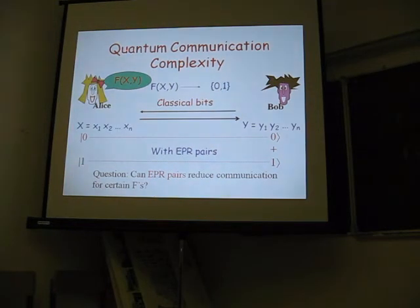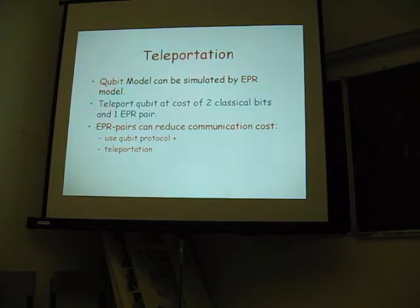So now let's look again at quantum communication complexity. Alice and Bob still send back and forth classical bits, but I equip them with EPR pairs, as many as they like. So this is like another model of communication complexity. Communication is classical, but they have on the side EPR pairs. Think of it as like having shared randomness. Because now they have shared components. And of course the question is, can EPR pairs reduce communication for certain apps? And the answer is yes, because I can use teleportation together with the qubit protocols that I told you about earlier.